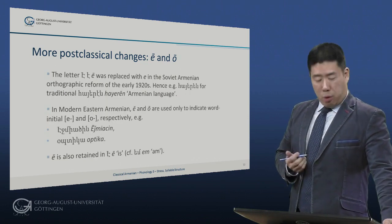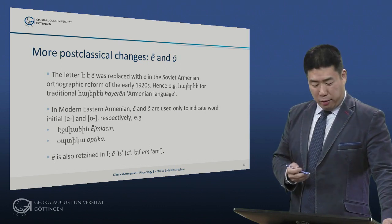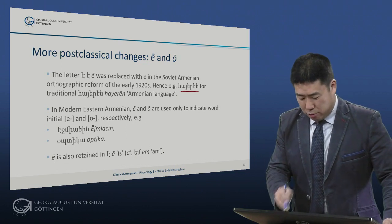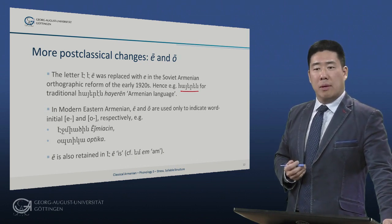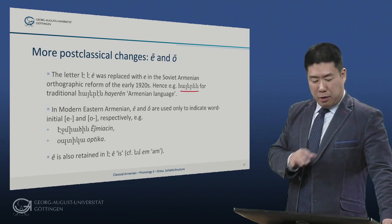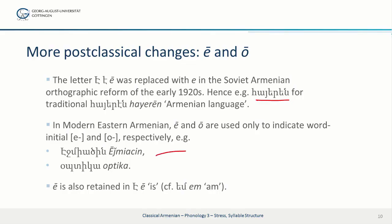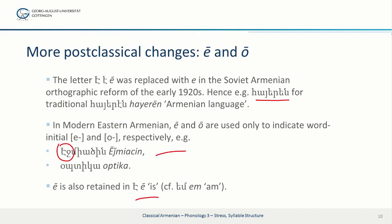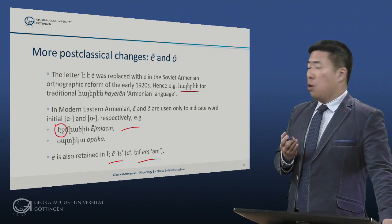This has consequences for the modern orthography. The letter a was replaced with e in the Soviet Armenian orthographic reform of the early 1920s — hence, for example, hyeren ('Armenian language') is spelled in modern eastern Armenian with two e vowels. This reform was never adopted among Armenians living in the diaspora, so publications in western Armenian to this day continue to use the traditional spelling. In modern eastern Armenian, a survives only to indicate word-initial a — for example, in the place name Ejmyatsin — and in the present third singular of 'be': a ('he/she/it is'), compare m ('I am'). The vowel o is used only to indicate word-initial o, in contrast to vo, as in the borrowing optica ('optician').